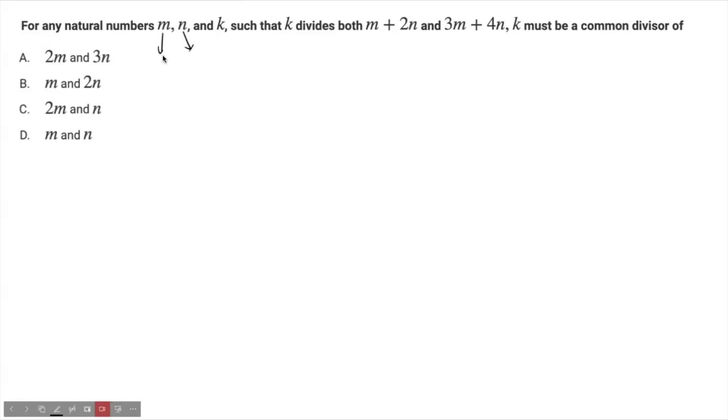Take m randomly as 2 and n as 5. So m+2n will be 2 plus 2×5, which is 10. 10 plus 2 is 12.